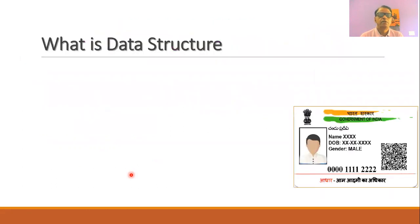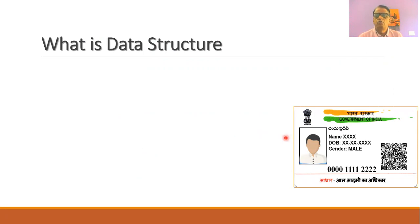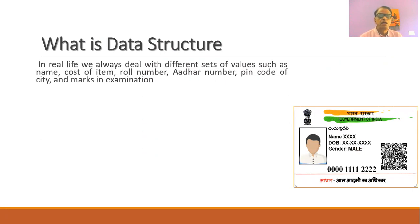Let us start the session with the question: what do we mean by data structure? When we live in India, we know that the government has issued us an Aadhaar card. In the Aadhaar card you can easily observe there is a lot of data — such as the name, date of birth, the gender — and every card has a unique number. So in real life we always want to deal with different sets of values.